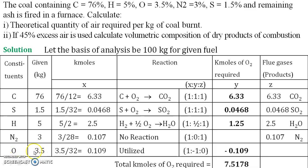Therefore, moisture and ash are not considered in this table. Even if you have written them, you can write a dash. Carbon is 76 kg — this is the given data. Now you have to convert it into kilomoles. To convert all these factors into kilomoles, divide each component by its molecular weight.